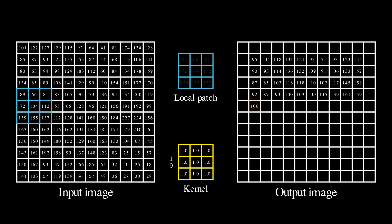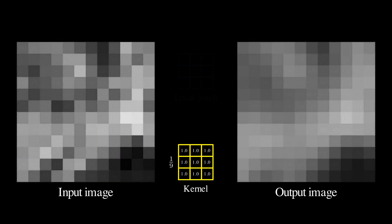The entire operation is defined by a 3x3 grid of coefficients, called a kernel. Once we process every pixel, we get the blur image on the right.